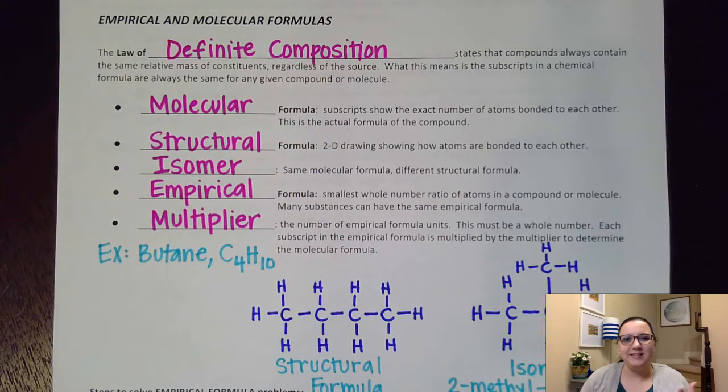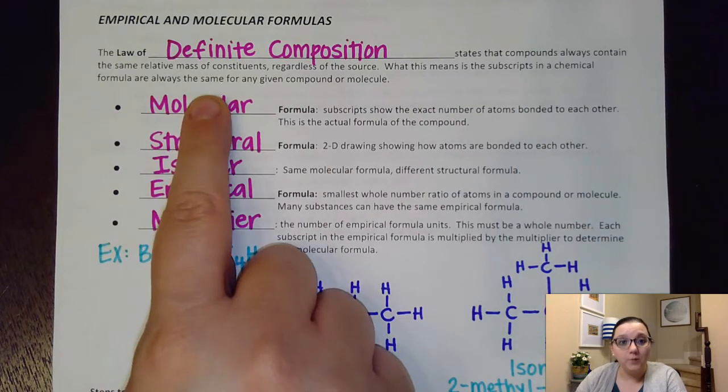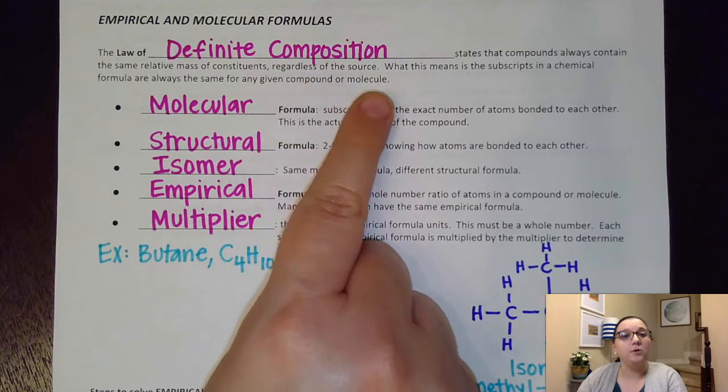To kind of give us an example of this, it doesn't matter where on earth I go find water. Water will always have the compound formula of H2O. It'll always be two atoms of hydrogen for every one atom of oxygen. It'll always be 2.02 grams of hydrogen for every 16 grams of oxygen. It doesn't matter where I find it, it's always going to be in that ratio. So the subscripts in a chemical formula are always the same for any given compound or molecule.